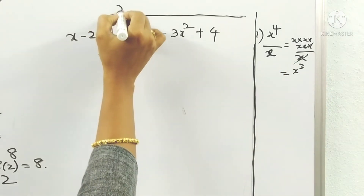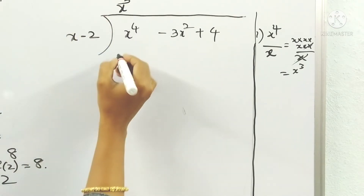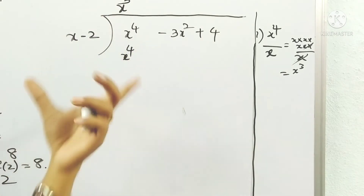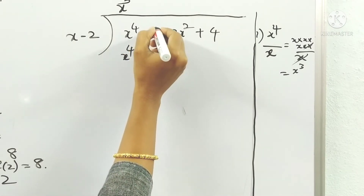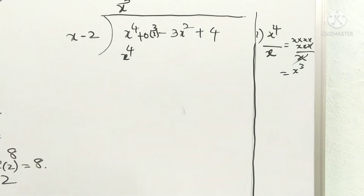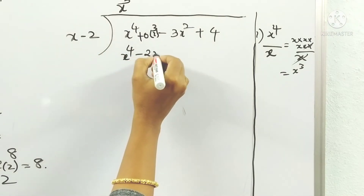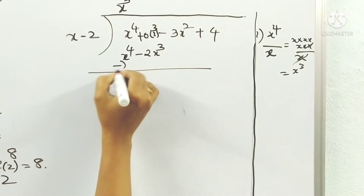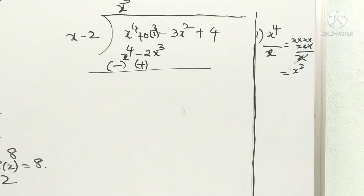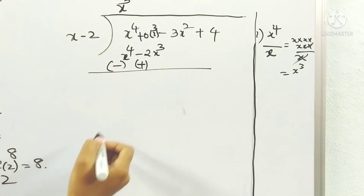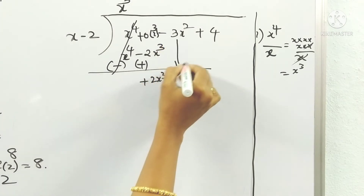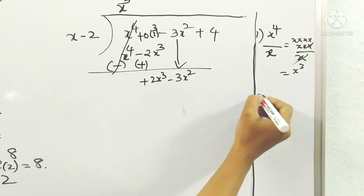x⁴ divided by x gives x³, so write x³ in the quotient. Then x into x³ = x⁴, and minus 2 into x³ = minus 2x³. Since we don't have an x³ term in the dividend, we write 0x³. Subtracting gives plus 2x³ as the remainder.